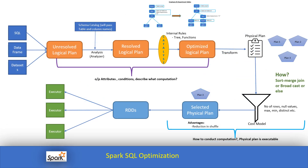Let's understand logical and physical plans. When we submit a SQL query, a DataFrame, or a Dataset to Spark, it initially creates an unresolved logical plan. At this stage, Spark cannot identify what table we are talking about or what columns exist — these are unknown or unresolved. That is the first stage: the unresolved logical plan.